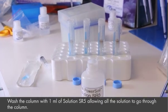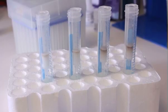Wash the column with 1 ml of solution SR5. Collect the flow in a 15 ml tube.